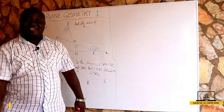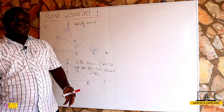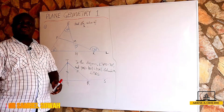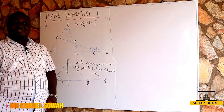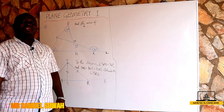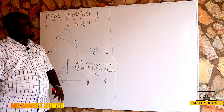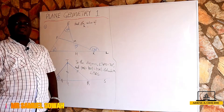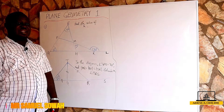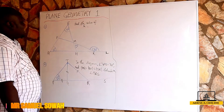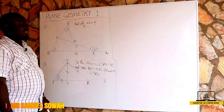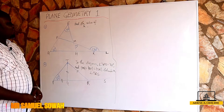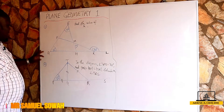In our previous lesson we learned that the sum of interior angles of a triangle add up to 180 degrees, and that two interior angles is equal to the exterior angle of the third side. Now let's use that and solve the questions on the board.